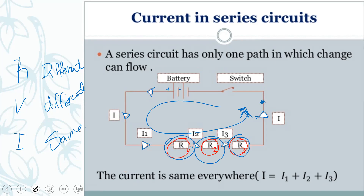The current will be the same everywhere in a series circuit because there is only one wire — one wire means one current. In a parallel circuit, the current is divided, but in series it stays the same.